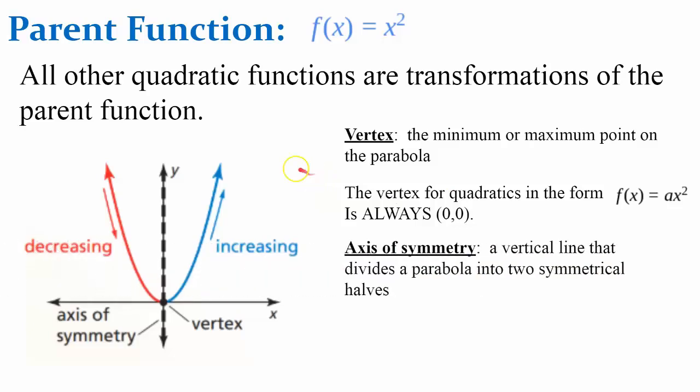The axis of symmetry is the vertical line, typically drawn as a dashed line when you graph a quadratic. It divides a parabola into two symmetrical halves. Today, the axis of symmetry for all quadratics in this form is always the y-axis, where the line x equals zero.